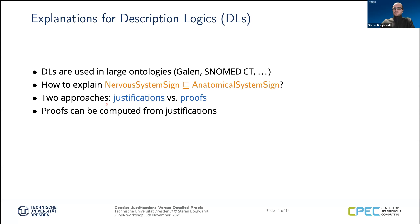As I said, we already heard the two approaches: justifications and proofs. The justifications are the basic starting point where you can say these are the axioms in the ontology that cause this problem, or at least one possibility of causing this entailment. And then proofs can be seen as another step on top, where you provide the user with additional steps that actually lead to the final conclusion.